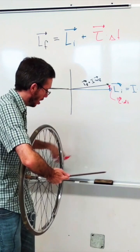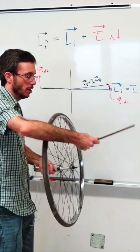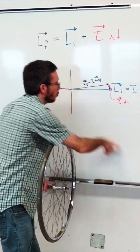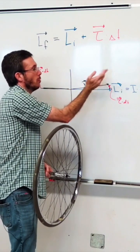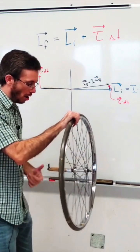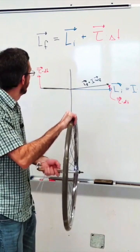And the only way for this to happen is if my wheel starts rotating to the left. And once I'm at this position, the same thing starts again. Now torque is trying to push that way, moving my angular momentum vector again and again and again.